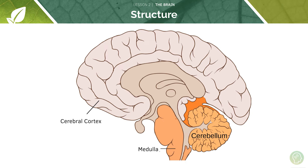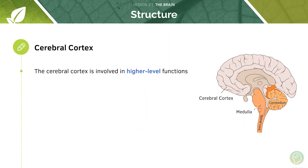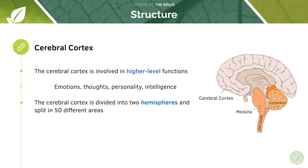This is the overall structure of the brain that you need to get really familiar with, because your examiners could potentially give you this diagram and ask you to label it. The cerebral cortex is involved in higher level functions: emotions, thoughts, personality, intelligence, and sense of smell. It's divided into two hemispheres and split into 50 different areas, and each hemisphere controls one side of the body, with each area specialised for a particular function.